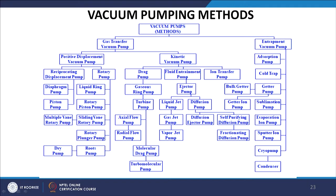Kinetic vacuum pumps can be drag pumps, field entrapment pumps, or ion transfer pumps. Drag pumps include gaseous ring pumps, turbine pumps, axial flow, radial flow, molecular drag, or turbo molecular pumps. Fluid entrainment pumps include ejector pumps classified as liquid jet or diffusion pumps, and diffusion ejector or self-purifying diffusion pumps. Entrapment vacuum pumps include adsorbent-based, cold trap, getter, sublimation, evaporation ion, sputter ion, cryopump, and condensation pumps.